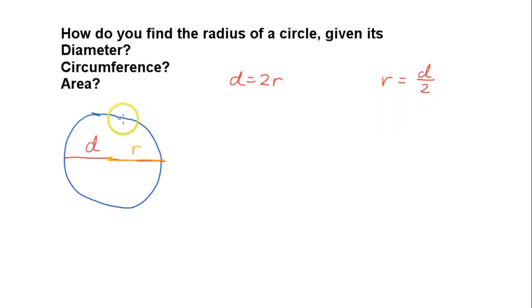What about the circumference? The circumference is that distance around that circle. So circumference, we know that formula, is 2 pi r.